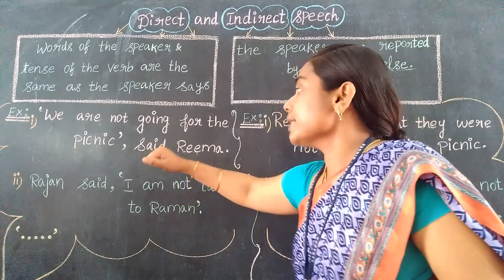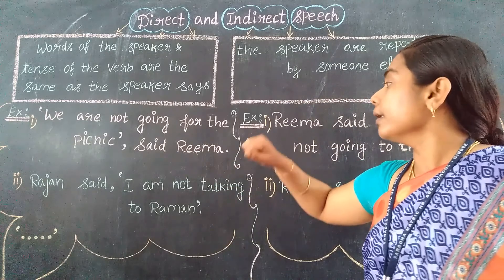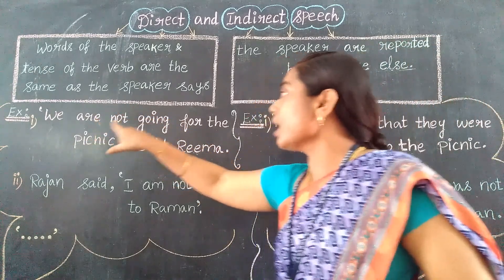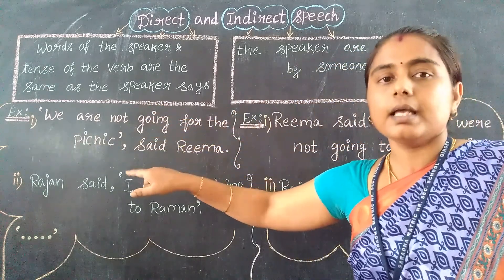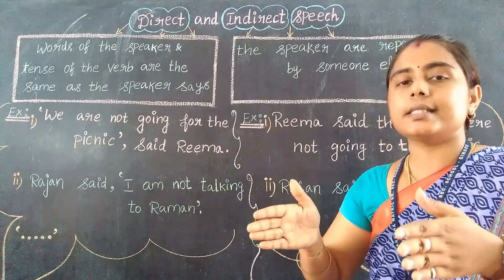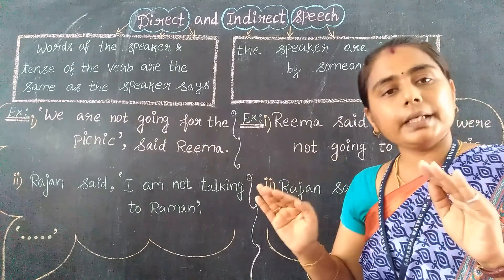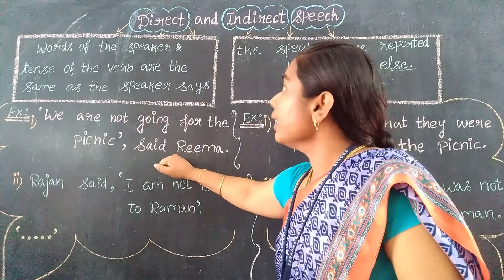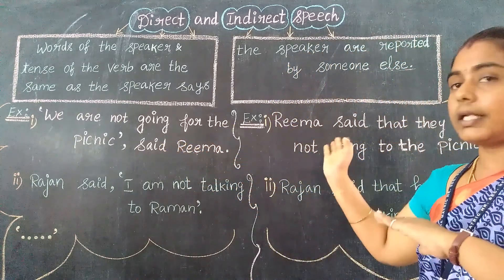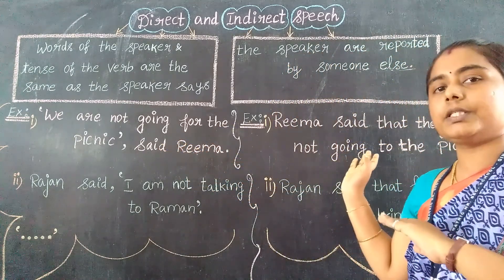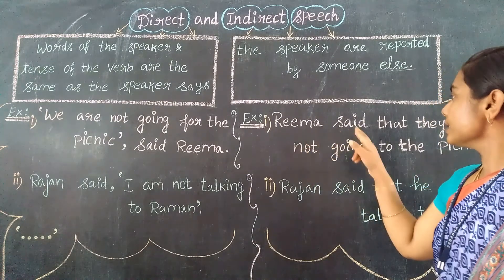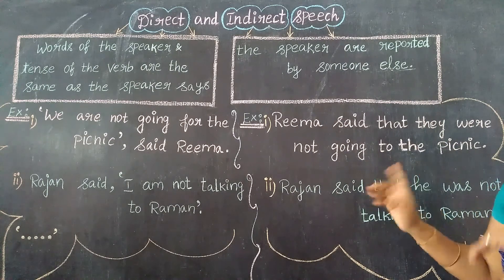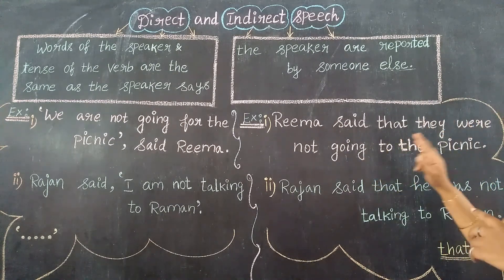At last — who said? Rima said. So: 'We are not going for the picnic,' said Rima. This is the direct speech. And while converting to indirect speech, see here: 'Rima said that they were not going to the picnic.' Rima is placed in the subject position. The meaning is the same, but the way of saying may vary.